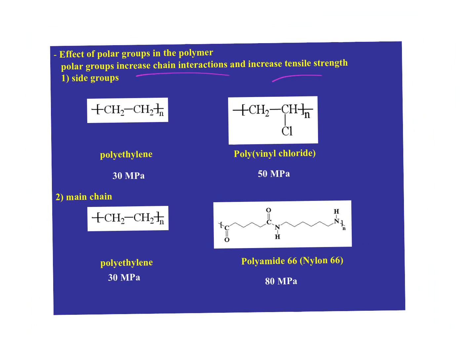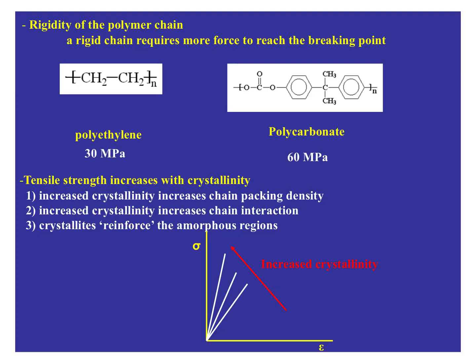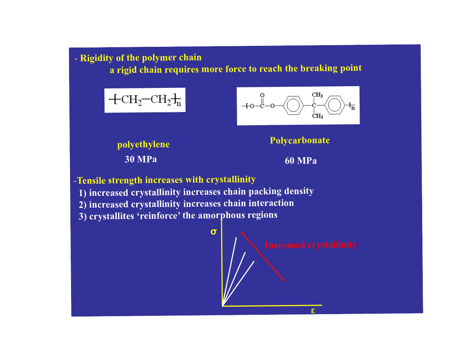Polar groups increase chain interactions and therefore increase tensile strength — PVC is harder than polyethylene, nylon is harder than polyethylene. Rigidity of the polymer chain is also a factor — big bulky groups along with hydrogen bonding. Tensile strength increases with crystallinity due to packing density and chain interactions, basically reinforcing the material. A semi-crystalline polymer is amorphous plus crystalline regions reinforcing the softer phase — all of this makes sense in terms of the increase of modulus versus crystallinity.